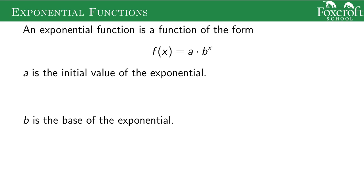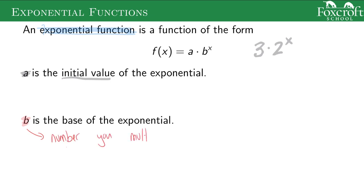Here's the definition: an exponential function is a function of the form a times b to the x. In our last case, this was three times two to the x. Three represented the zombies at the starting point — the zeroth day — so this 'a' is the initial value, which is where we start out. And 'b' is known as the base of the exponential — it's the number that you multiply by. Linears and exponentials are very similar with one key difference: with a linear function you add a constant every step; with exponentials you multiply by a constant every step. Addition and multiplication create these two different phenomena.